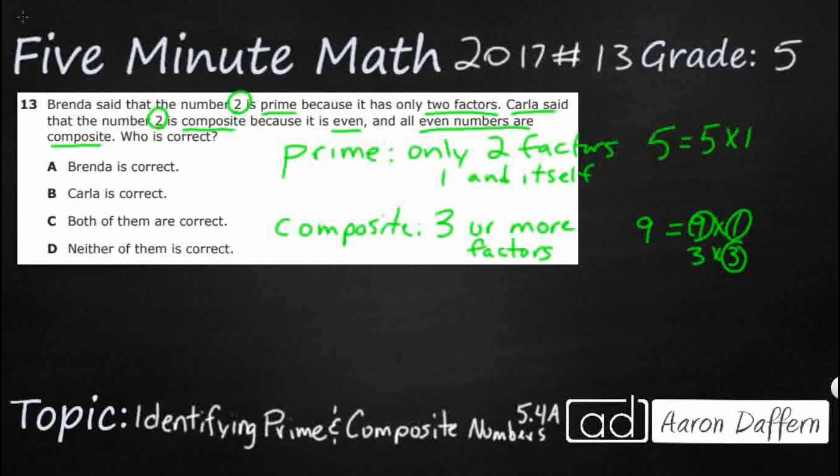But then you've got bigger numbers, right? You've got like 50. You can multiply 50 times 1 always. You could do 25 times 2. You could do 10 times 5. There's six different factors that you can get up to 50. So these are composite and these are prime.